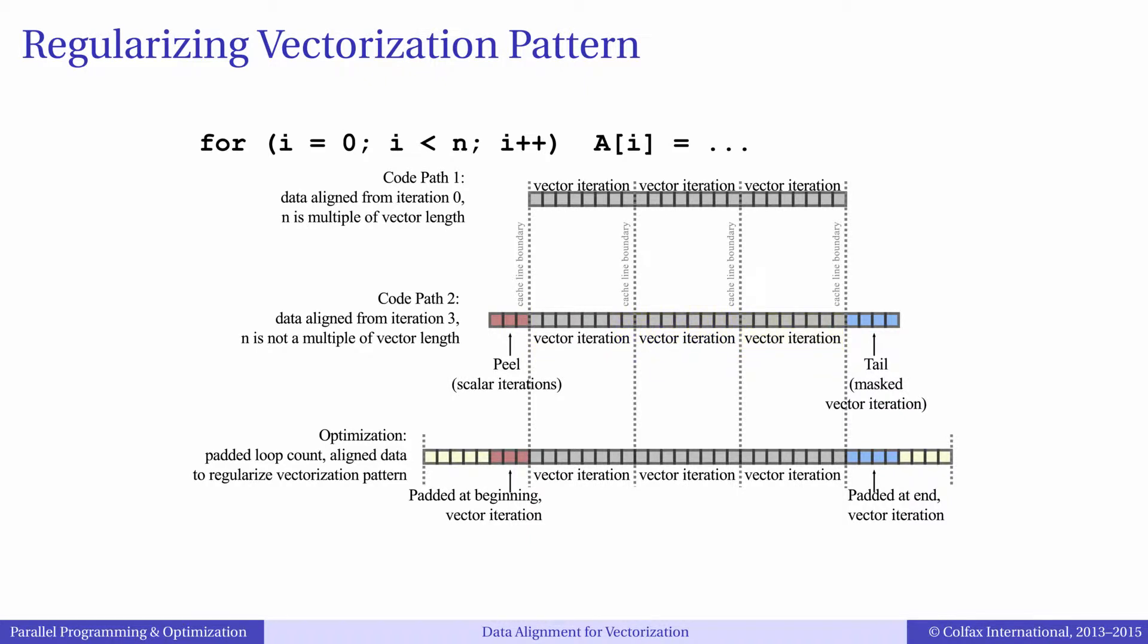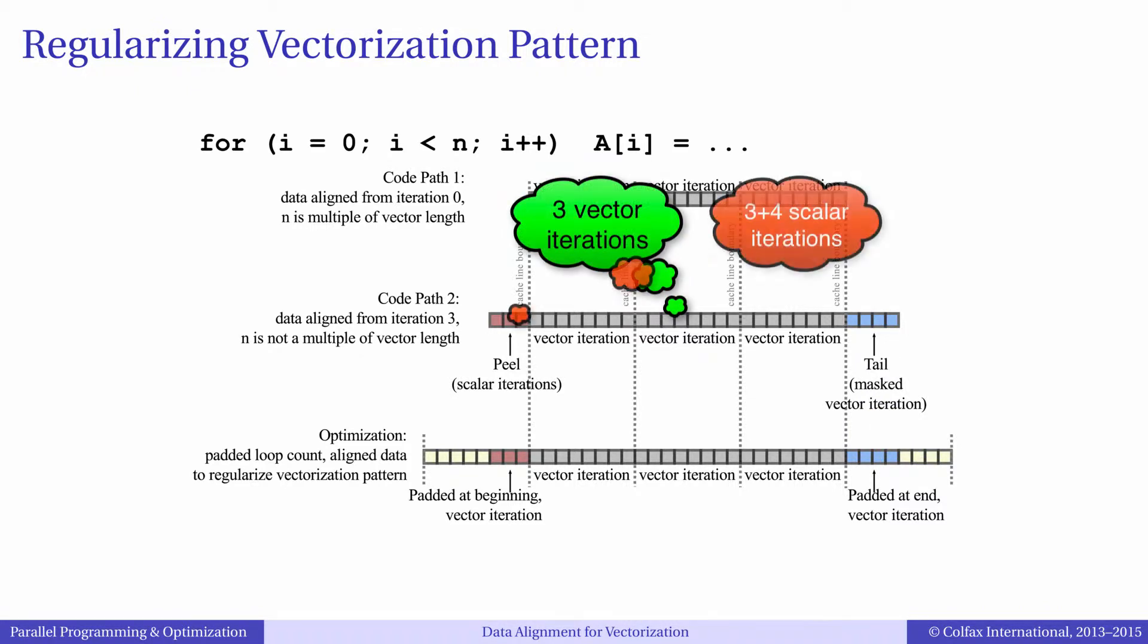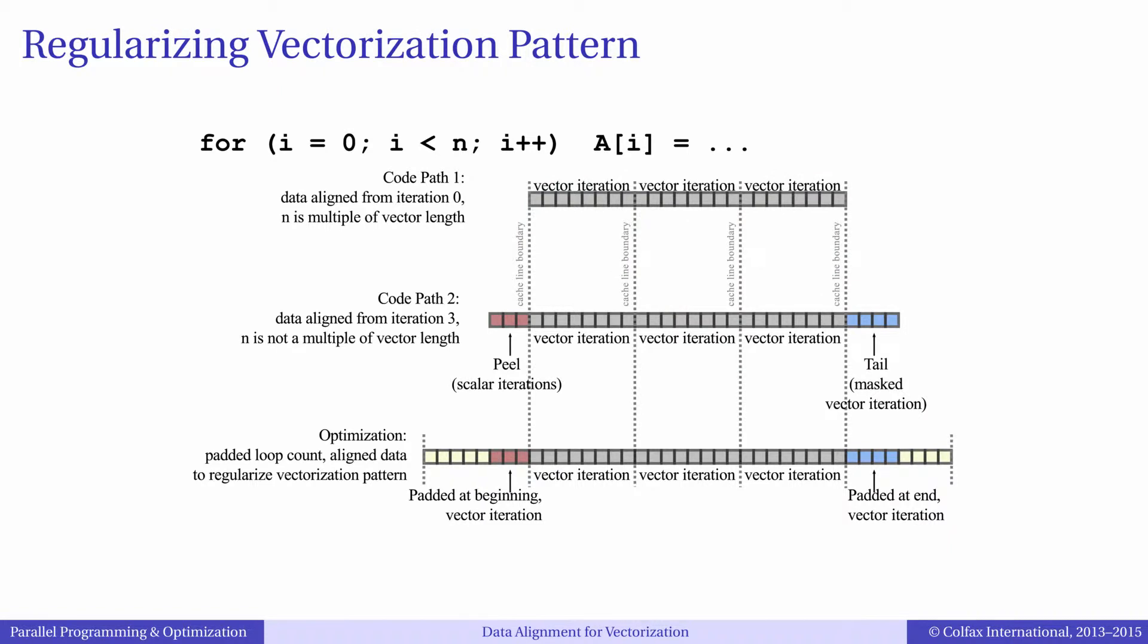If after that point, your iteration count is not a multiple of vector length, for example 16, the compiler can implement a remainder loop, which again is performed using scalar instructions or masked vector instructions. Even though the compiler can produce correct results when you have irregular vectorization pattern with a peel loop and a remainder loop, the efficiency of calculations may suffer in this case. This is especially important for short loops, in which the overhead of the peel loop and the remainder loop may be significant. To improve performance in this case, we can regularize the vectorization pattern.